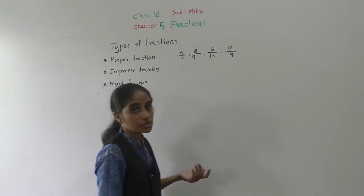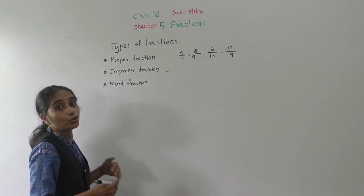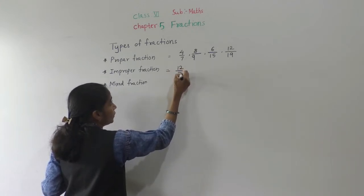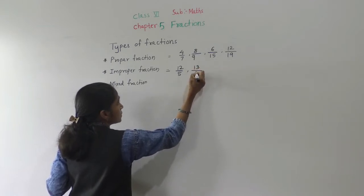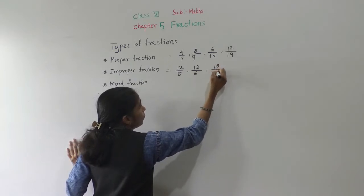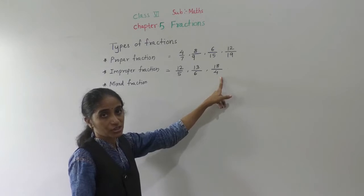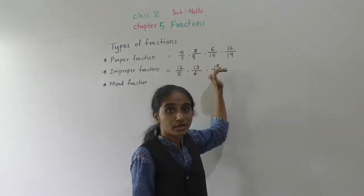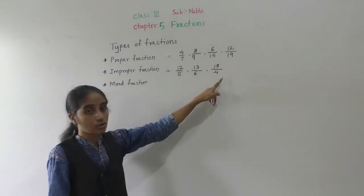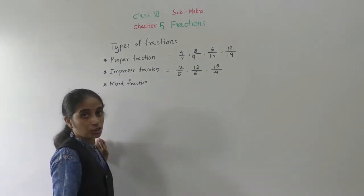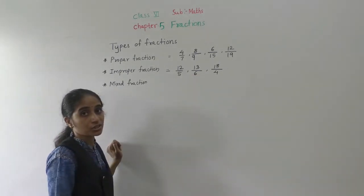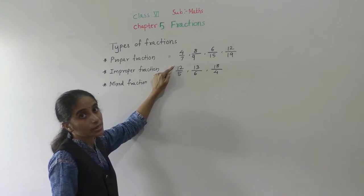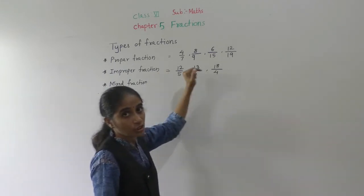Now, improper fraction — what is improper fraction? If the numerator is greater than the denominator, that fraction is called an improper fraction. Examples: 12 upon 5, 13 upon 6, 18 upon 4. These are all improper fractions because the numerator is greater than the denominator.